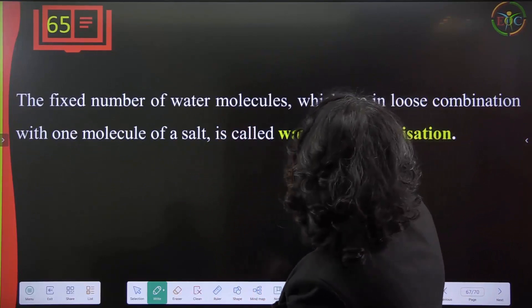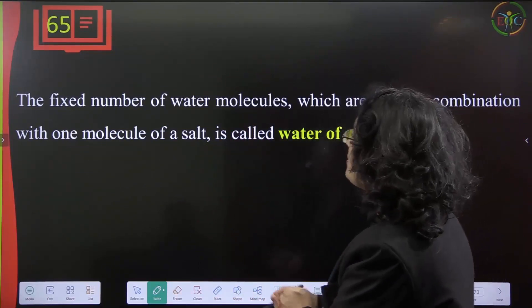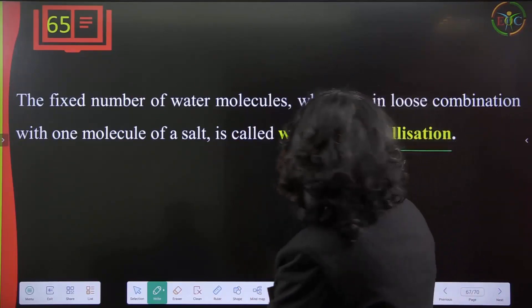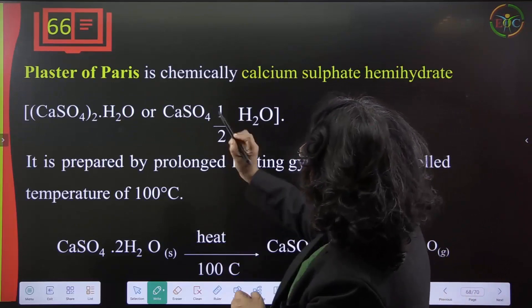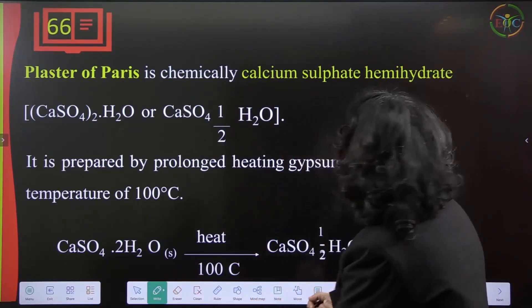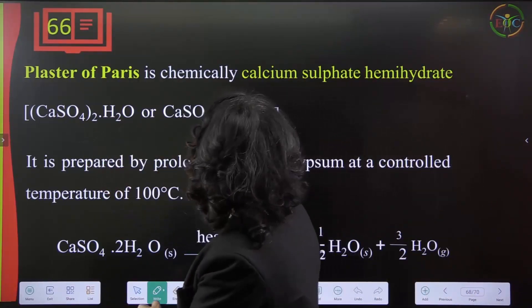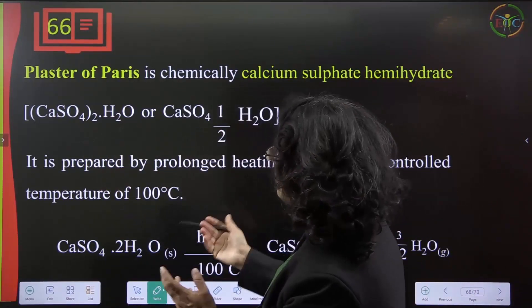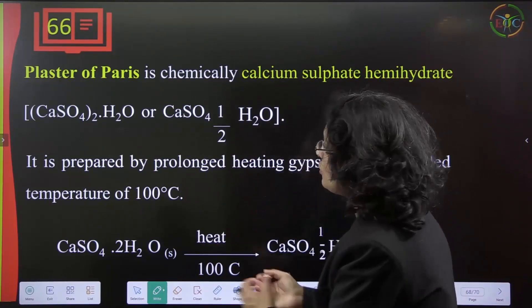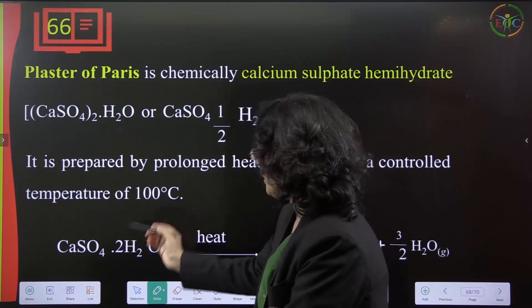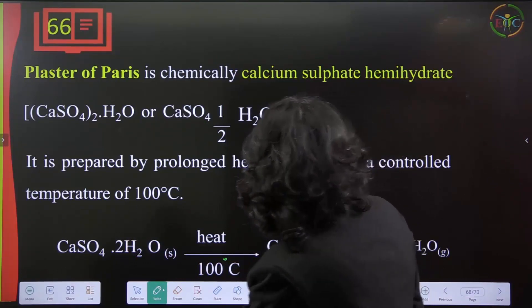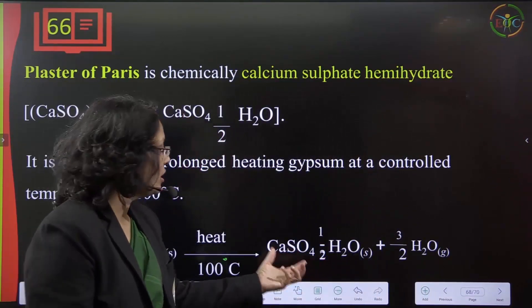The fixed number of water molecules loosely combined with one molecule of a salt is called water of crystallization. Plaster of Paris is chemically calcium sulfate hemihydrate. It is prepared by prolonged heating of gypsum at a controlled temperature of 100°C.